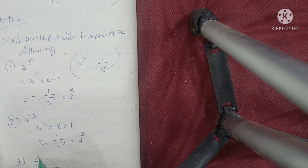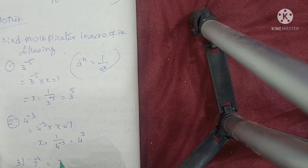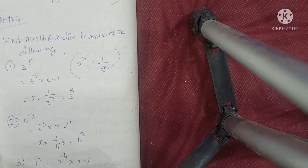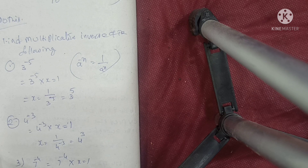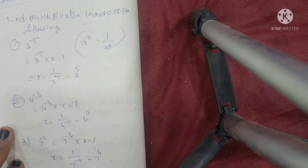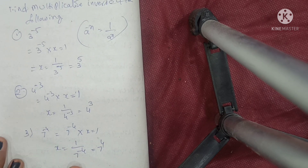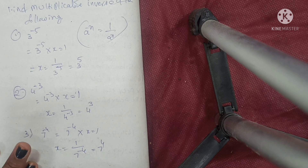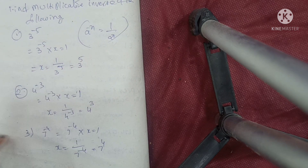Next one: 7 power of minus 4. Setting 7^(-4) × x = 1, so x = 1 by 7 power of minus 4, that is equal to 7 power of 4. Very, very simple — all of these use the same formula substitution.